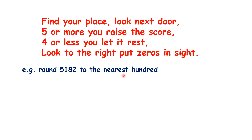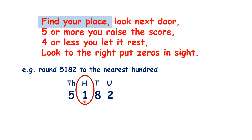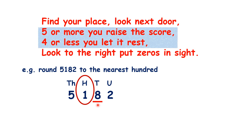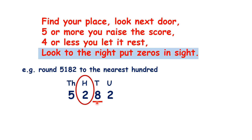Now if we're rounding to the nearest hundred, we find the hundreds place, look at the tens place, and because it's five or more — because it's an eight — we need to raise the score. So we increase our hundreds digit by one, and then look to the right to put zeros in sight.